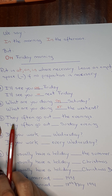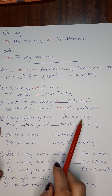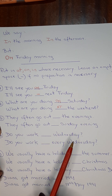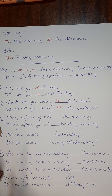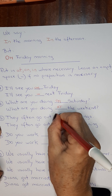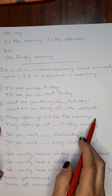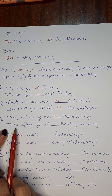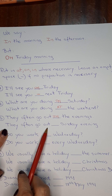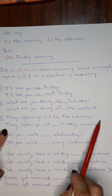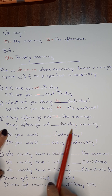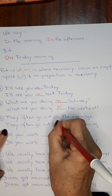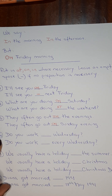Number three: They often go out the evenings. Remember, morning, afternoon — in. In the evenings. But look here: They often go out Sunday evening. The first word is a day, so: on Sunday evening.